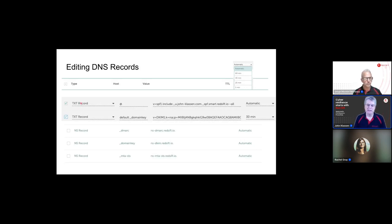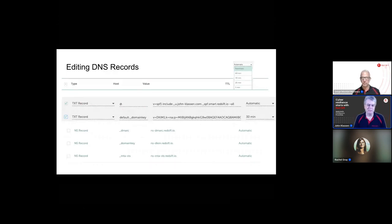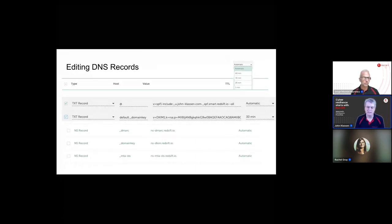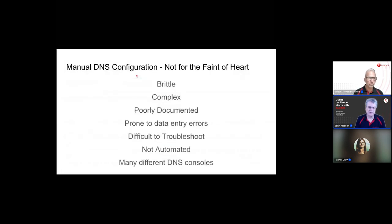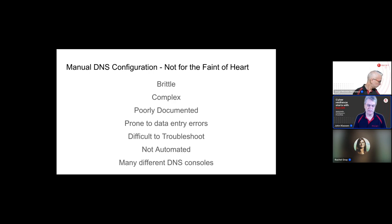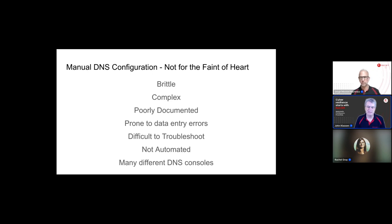Here's an example of a DNS console — not a lot to work with. You pick a record type — there are a number of different ones — put in the host. I was flabbergasted that I needed to put in the at-sign for the host. The DKIM value can be a very long text string representing the key. Now I'm going to show you what this actually looks like. I'm looking at johnclassen.com, and going into the advanced DNS you can see some of these values.